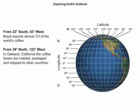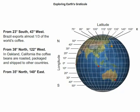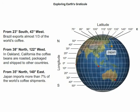Now, the final destination of our coffee beans is located at 35 degrees north, 140 degrees east. Japan imports more than 7% of the world's total coffee shipments.